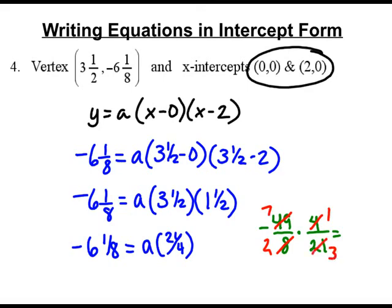So when I do the math and multiply across, I get a negative 7 times 1, which is 7. 2 times 3, which is 6, so negative 7 sixths is my a value. So my equation, my final answer, will be y equals a, which is negative 7 sixths. X minus 0 is just x, so I'm just going to put x and then x minus 2.